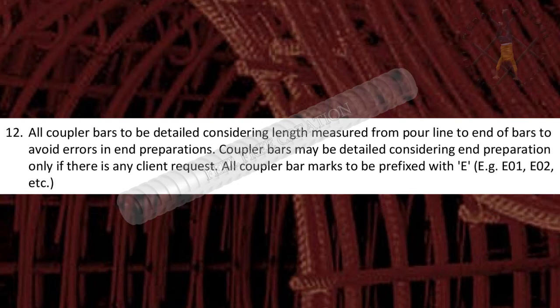Point 12. All coupler bars to be detailed considering length measured from pour line to end of bars to avoid errors in end preparations. Coupler bars may be detailed considering end preparation only if there is any client request.